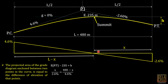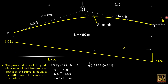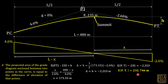Solving that proportion gives x equals 173.33 meters. Then the difference in elevation h is the area of the triangle: one half times x times negative 2.6% equals negative 2.253 meters. Following the equation — elevation of PT minus 235 equals negative 2.253 — we arrive at the elevation of PT equals 232.746 meters.